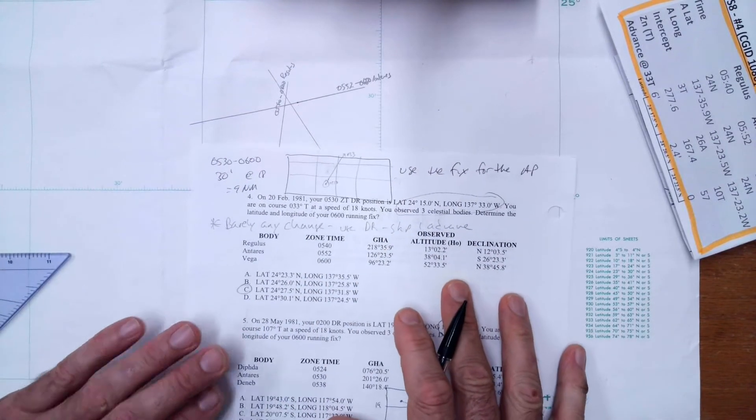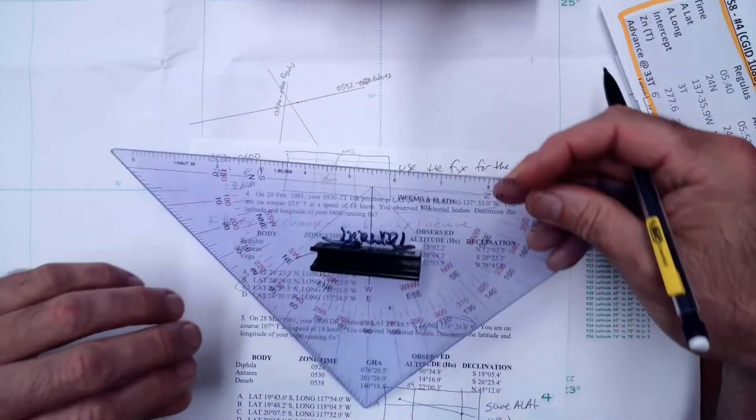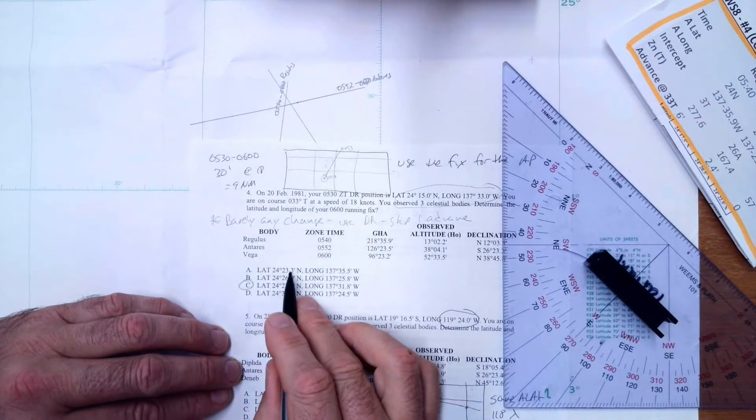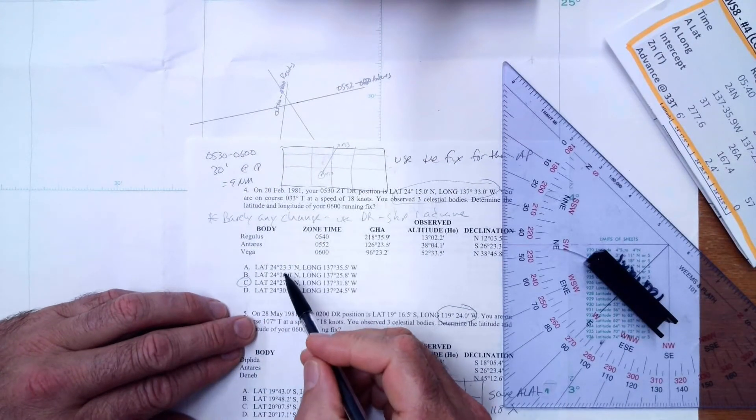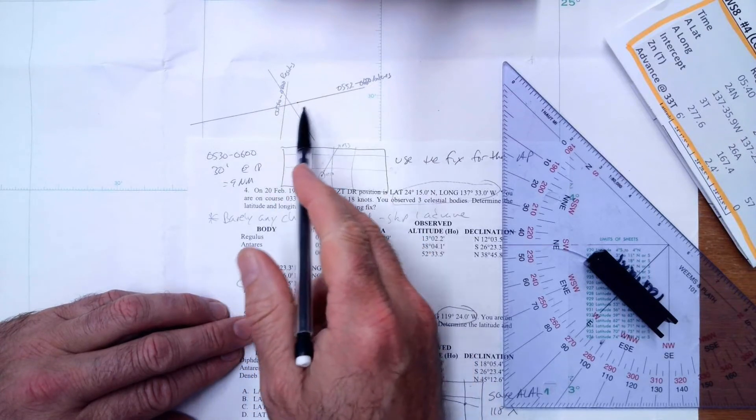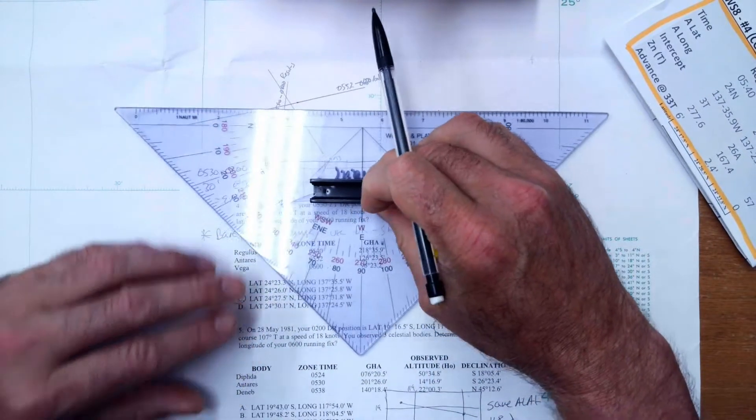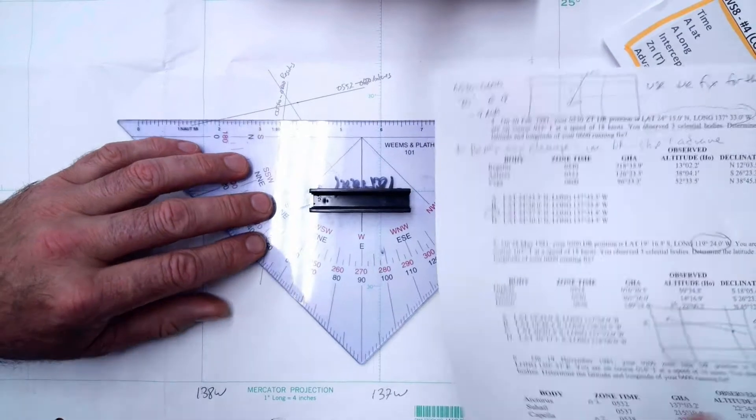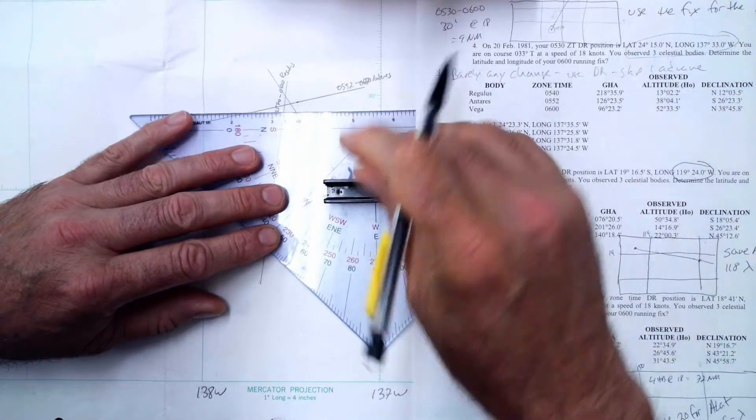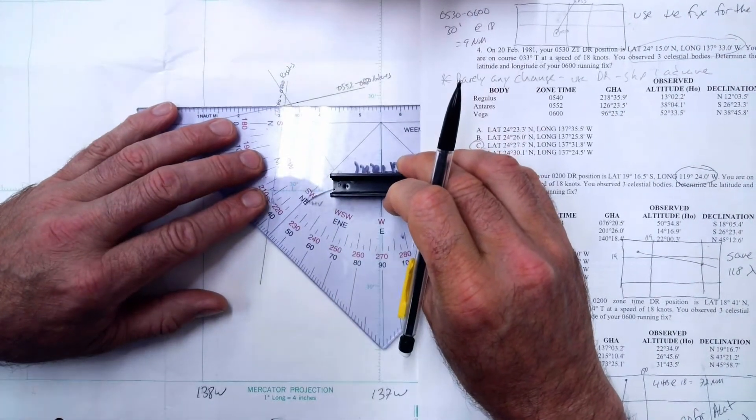Now it turns out for this problem the answer is four. Now we don't know that yet, but this is how I'm going to do this. I'm going to take my triangle and I'm going to look at my latitudes: 23, 26. I'm going to see if one of these latitudes matches up with any of these points. So I can take this over here and I can come over here.